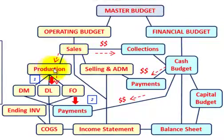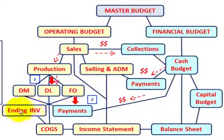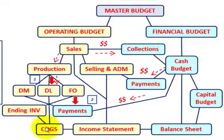Under the production budget you have your direct materials, direct labor, and factory overhead. Knowing those amounts, you can determine your ending inventory amounts based on production requirements, and then based on sales requirements you can determine the cost of goods sold, and knowing your cost of goods sold you can determine the income statement.